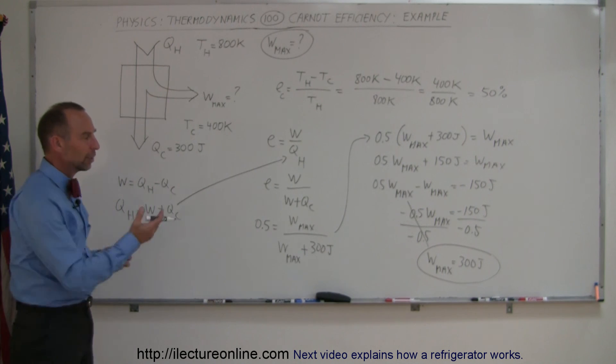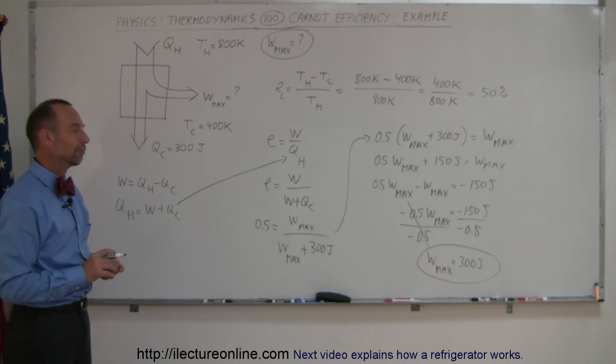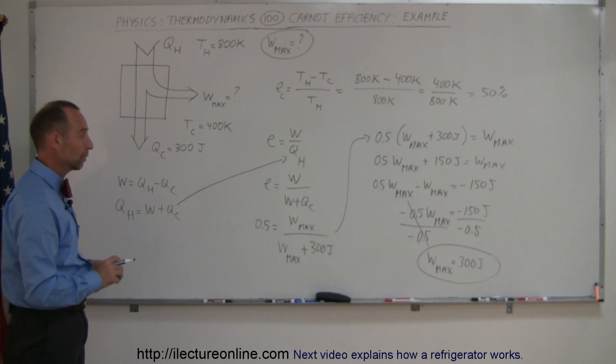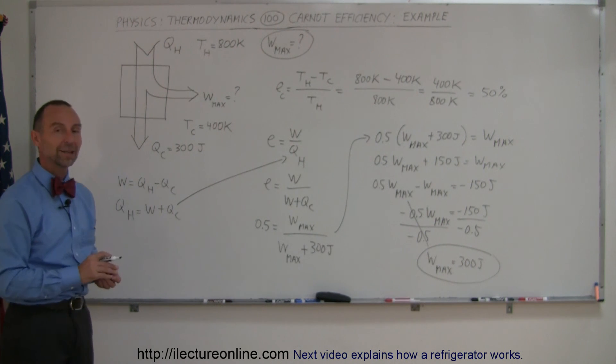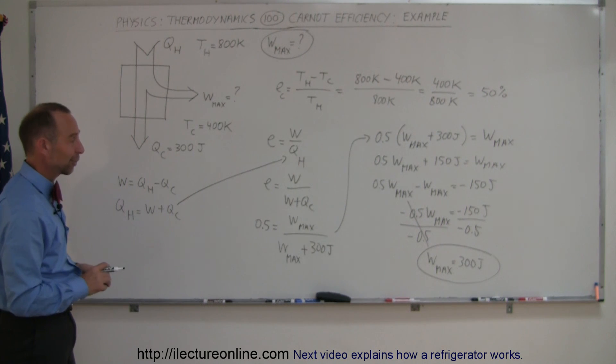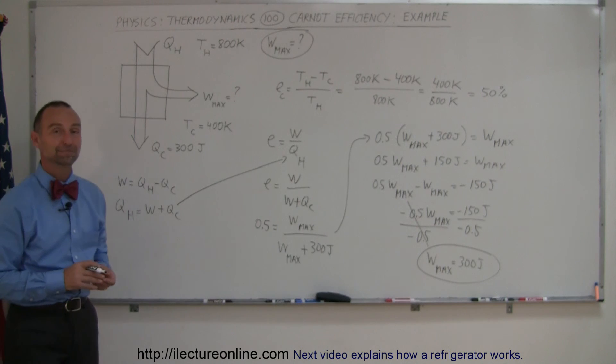And of course, in reality, you probably couldn't build an engine to be that efficient, so it would be somewhat less than the 300 joules, but that's a good starting point. You know it's not going to be more than that, or even equal to that, because you can't violate the second law of thermodynamics, and that's how you do that. Thank you.